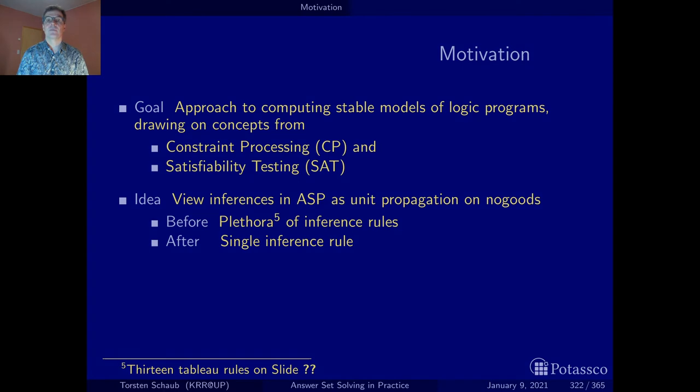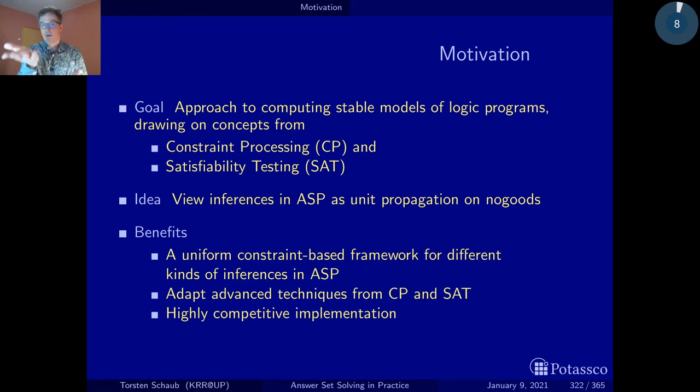At the end of the day, this simple idea carries very far and provides us with a general methodology of capturing arbitrary language constructs in ASP by transforming them into no-goods. You want to come up with a new language construct, you provide a translation into no-goods, you plug it into the overall framework, and you can run them. So what we get is a uniform constraint-based framework for capturing the inference induced by these language constructs. And the no-good is nothing else than a Boolean constraint. But keep in mind that techniques from constraint processing or satisfiability testing are designed to operate under the open-world assumption.